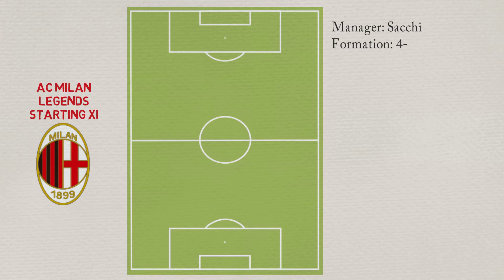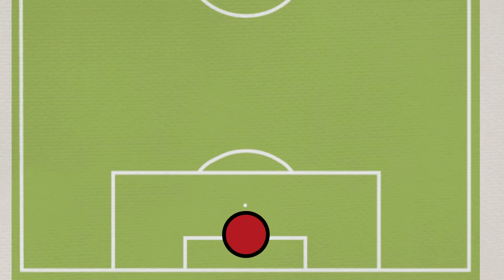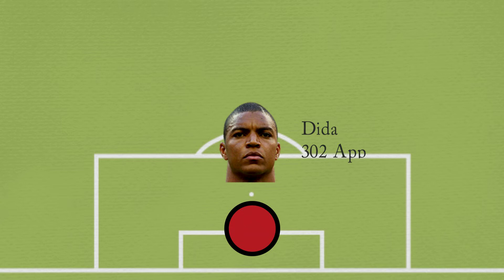Dida is in goal. The Brazilian goalkeeper has played 302 matches with AC Milan, winning a total of 8 major trophies. Dida has a potential ability of 178.